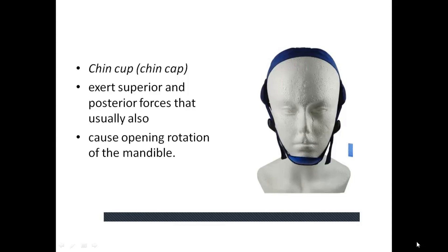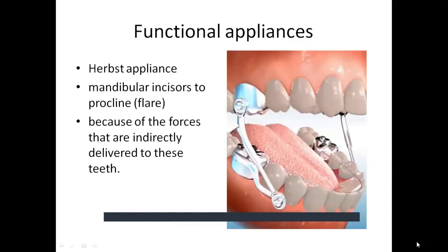Functional appliances hold the mandible in a protrusive position, transmitting forces from stretched muscles and soft tissues to dental and skeletal components to produce tooth movement and growth modification. The Herbst appliance is a fixed functional appliance consisting of a piston-and-tube device that places the mandible in a forward position when the patient closes; it is cemented or bonded to the maxillary and mandibular arches, with a tendency to procline the mandibular incisors.